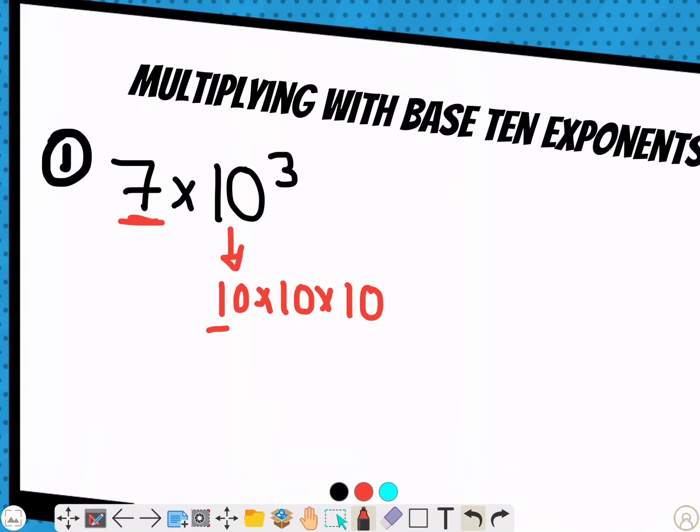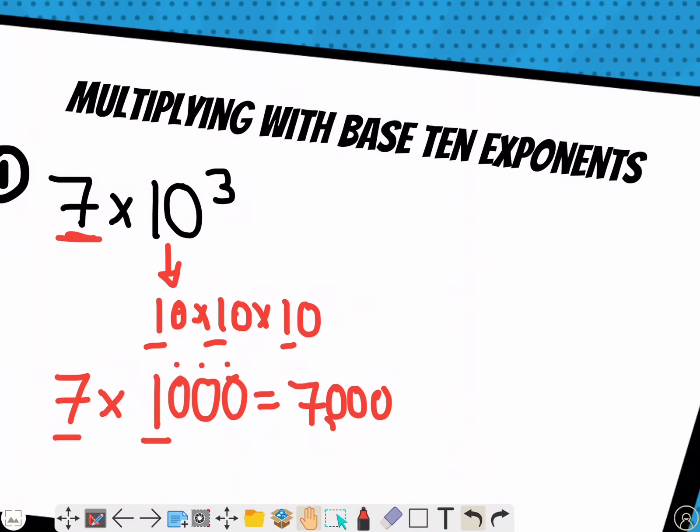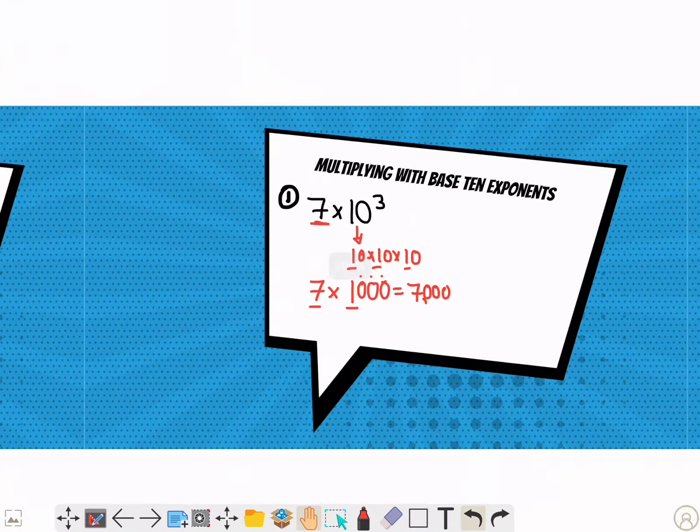You figure out one times one times one is one with three zeros, so that's one thousand. Now you're not doing seven times ten to the third, you're really doing seven times one thousand. Whenever you have a problem like that, you multiply the non-zero numbers: seven times one is seven with three zeros, giving you seven thousand.